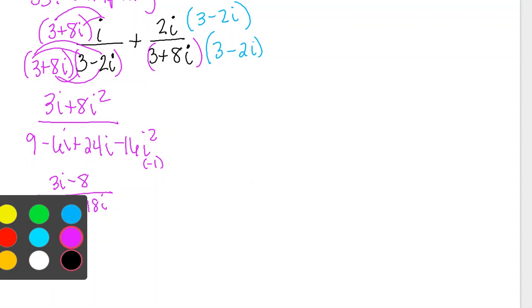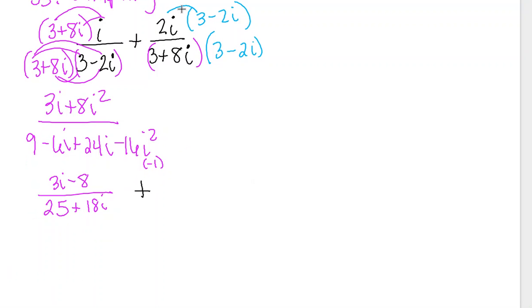Do the same thing on the other side, and you'll see what happens here. I end up with 6i minus 4i squared. My denominator is the same as this one, so it ends up being 25 plus 18i.